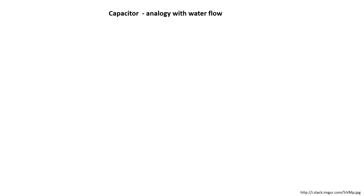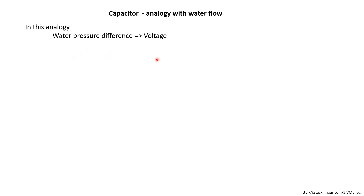In the previous slide, we had developed an analogy between current flow in an electrical circuit and water flow. In that analogy, pressure difference in the case of water can be compared to voltage in electrical circuits, and water flow itself can be compared to the flow of current. The amount of water that has flowed can be compared to the amount of charge that has flowed in the electrical circuit.